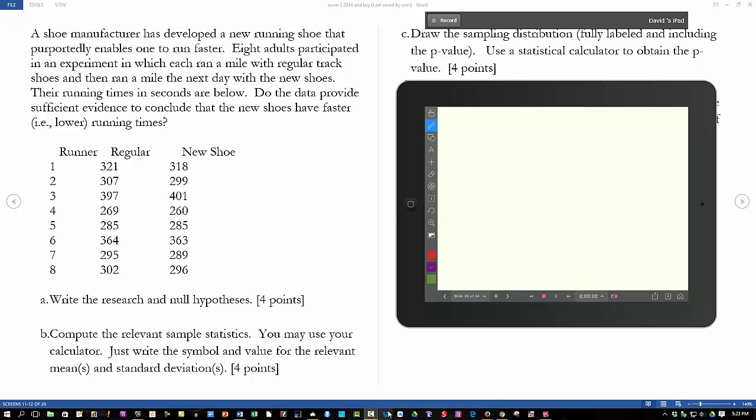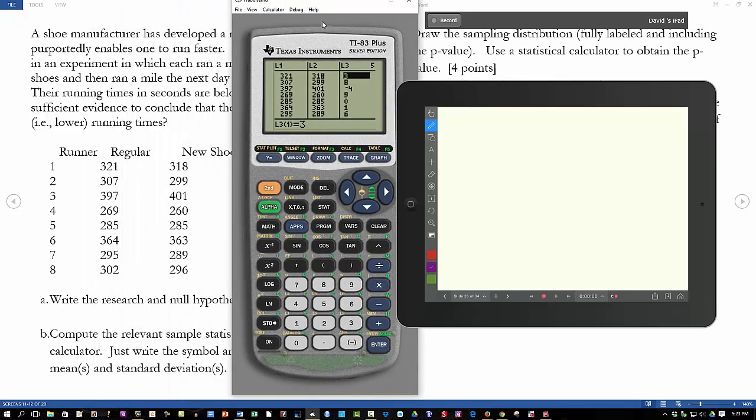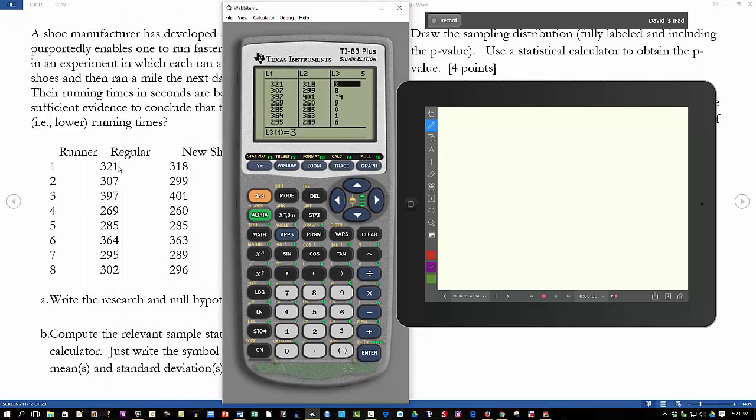So I'm going to now pull up my calculator. I'm going to stat, edit, and you can see in lists one and two, L1 and L2, that I have entered the times for the regular and the new shoes.